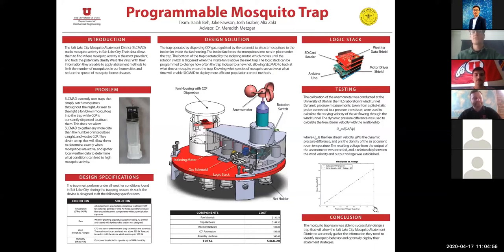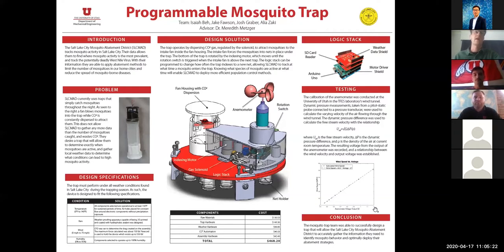The indexing between each trap is done by having two disks sandwiched together — a red disk on top and a disk that holds all the traps beneath it. That is indexed with the motor seen in the center of the trap, and a switch on the outside radius. That switch lets our logic know when a trap is directly underneath the intake and ready to begin capturing again.